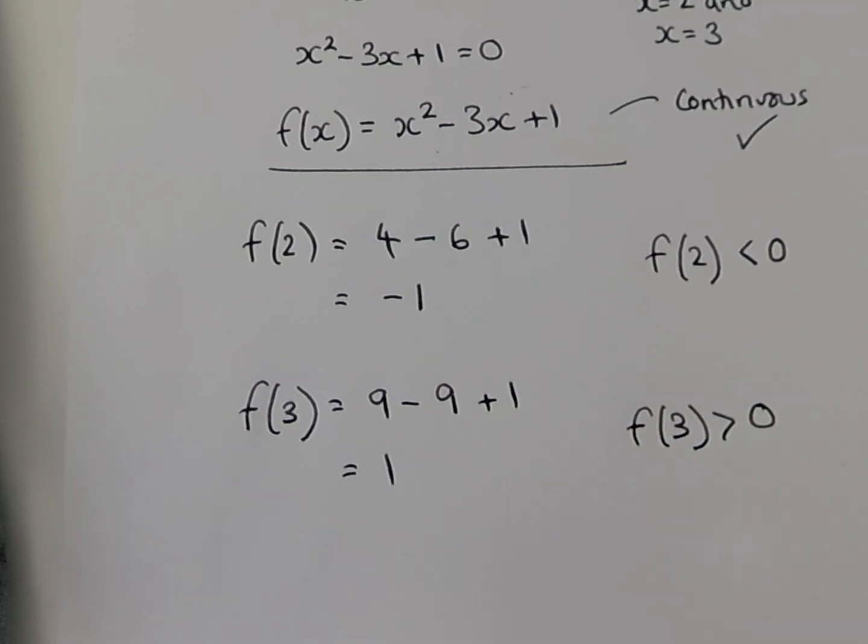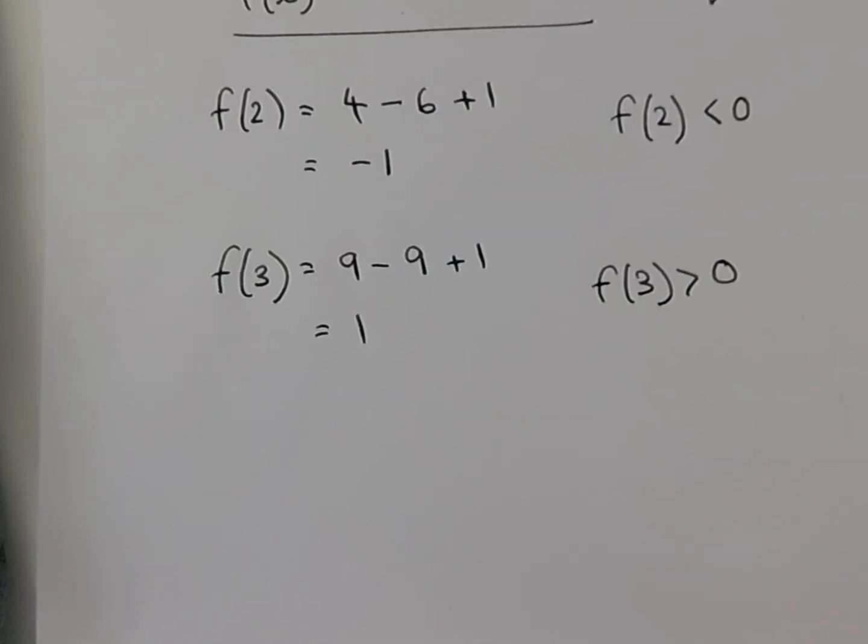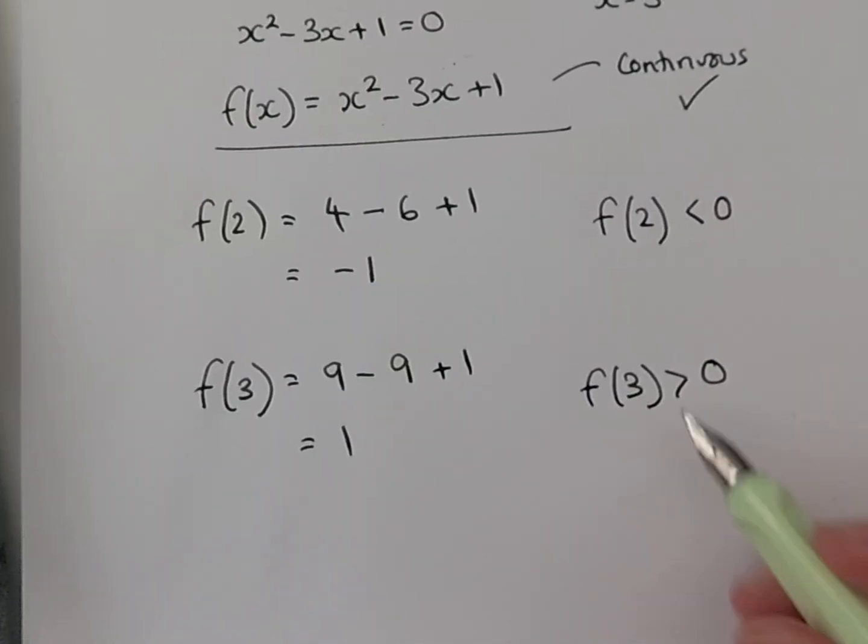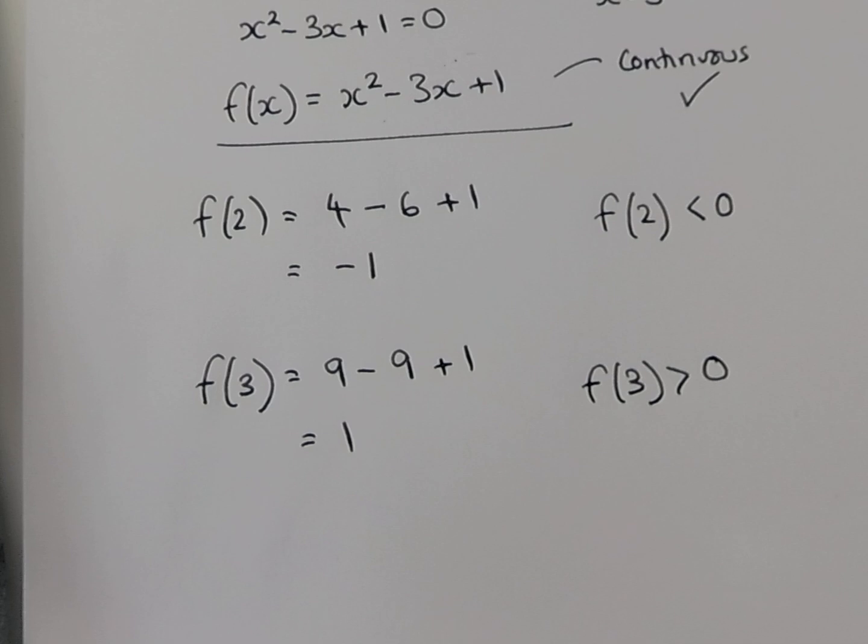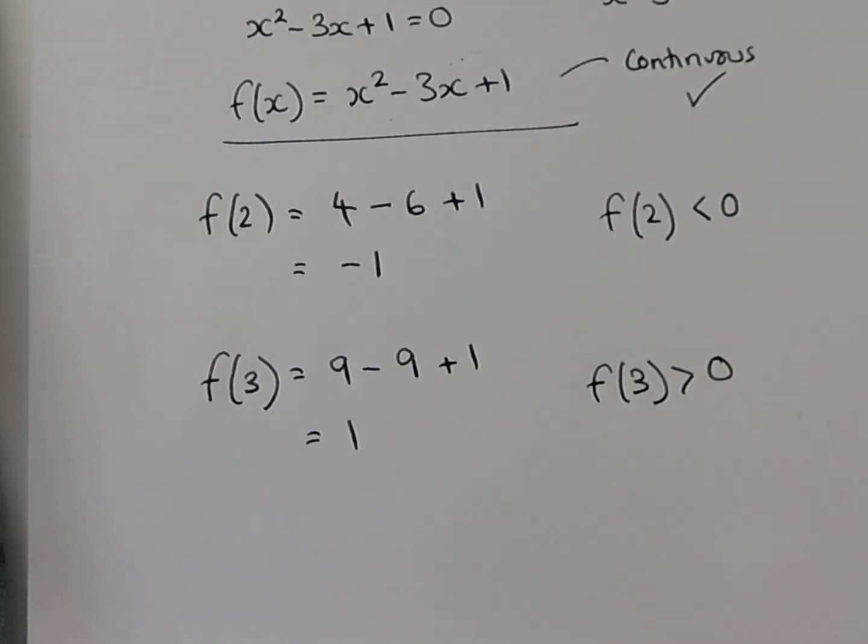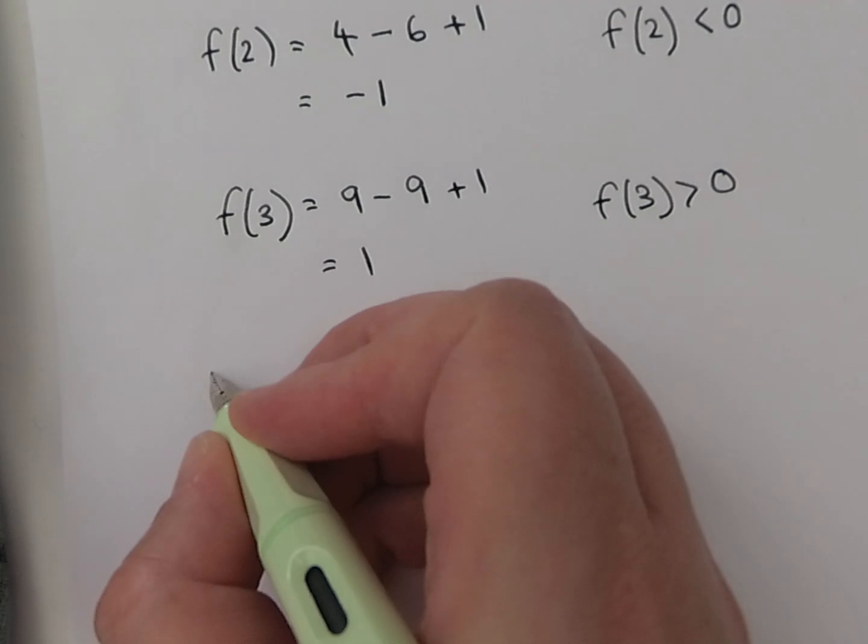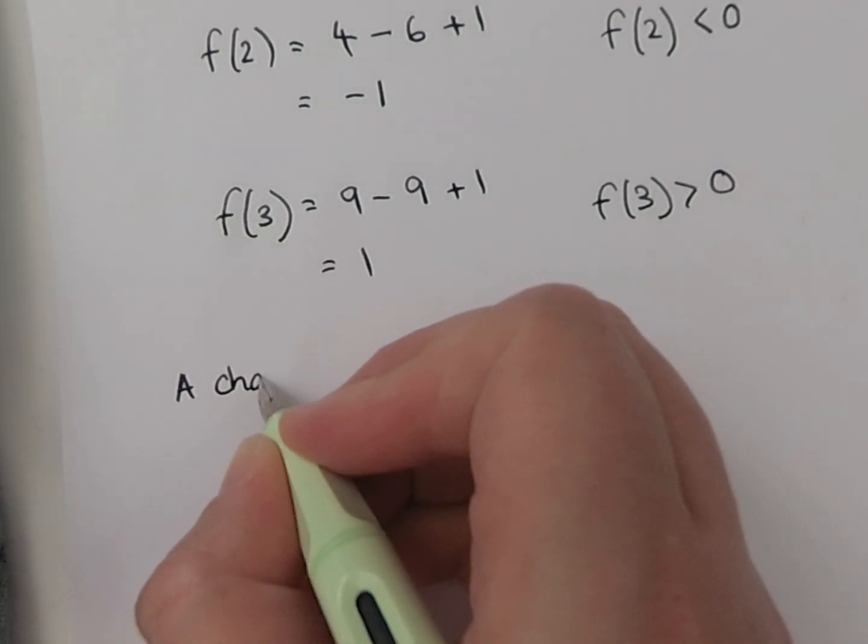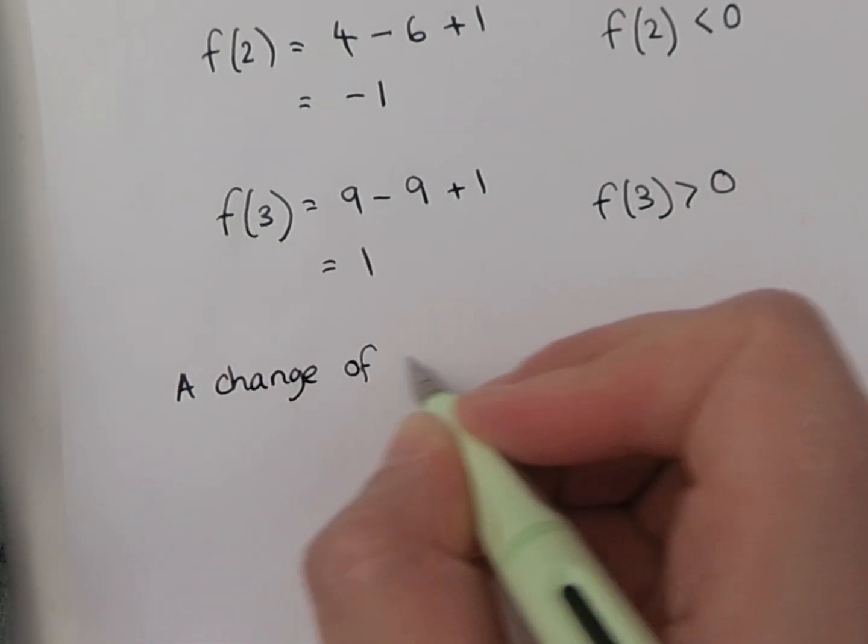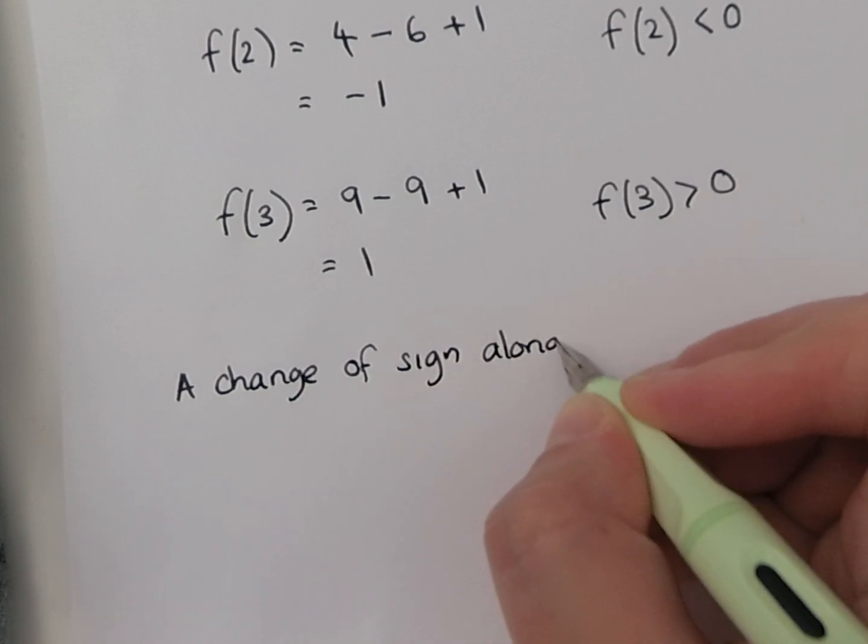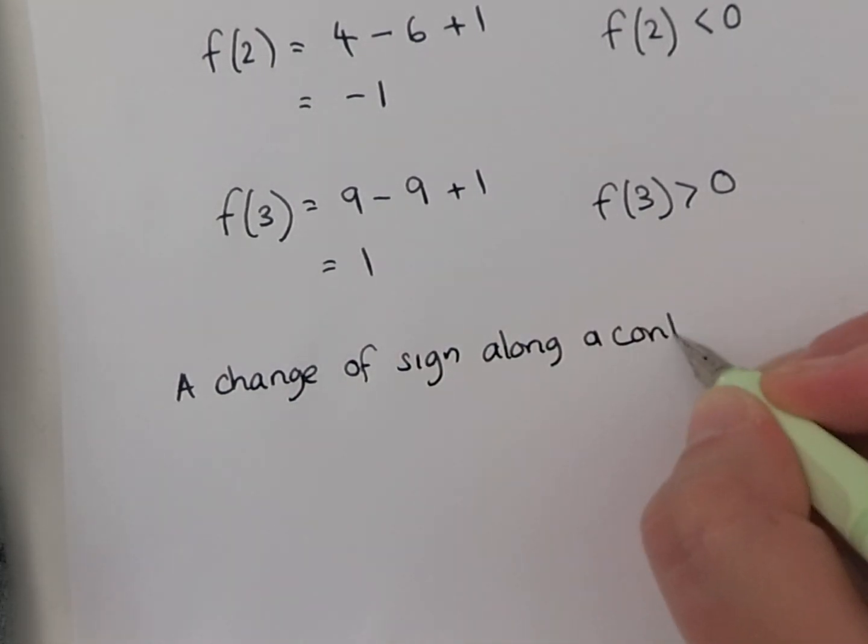And now this is the bit that we need to write in our answer in order to get full marks in an exam. We know that somewhere between 2 and 3, because our answer goes from negative to positive and it's continuous, it must pass through the x-axis, so there must be a solution in that range, and we need to write that down as a sentence.